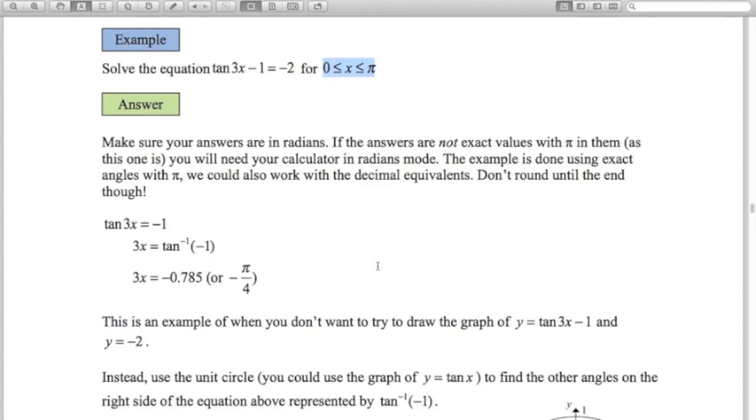Now this is an example where you don't want to draw the graph. The unit circle is much easier. I'm trying to find other values of tan to the minus 1 of minus 1, or shift tan of minus 1. I'm going to find those first, and then divide by 3. Don't divide by 3 here, and then try and find some other angles.